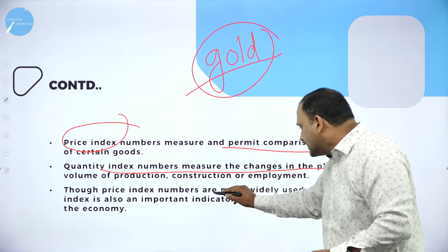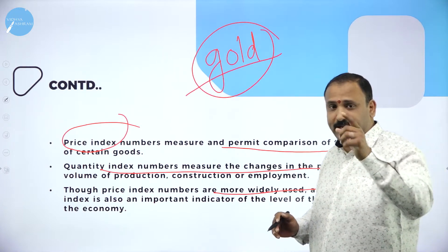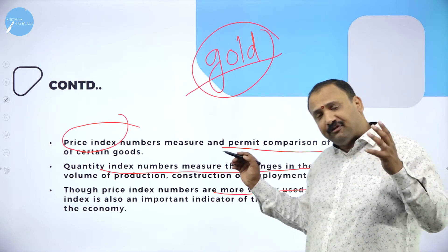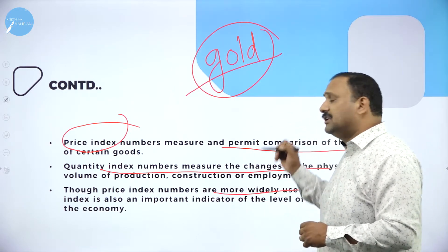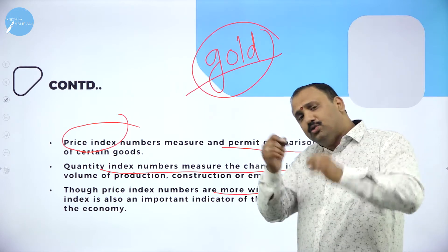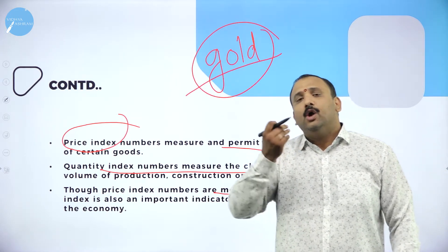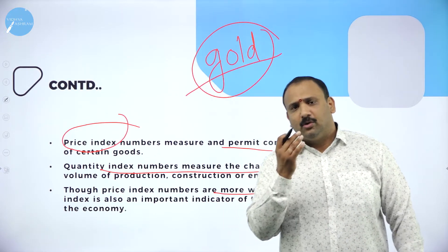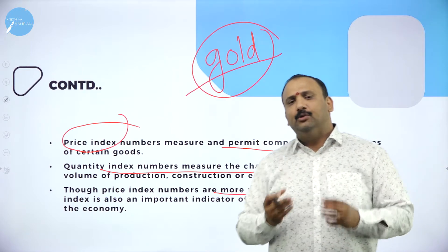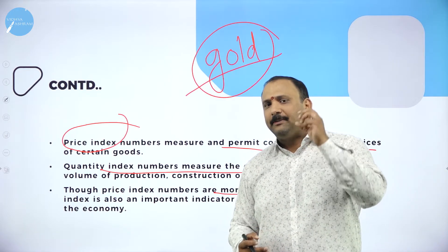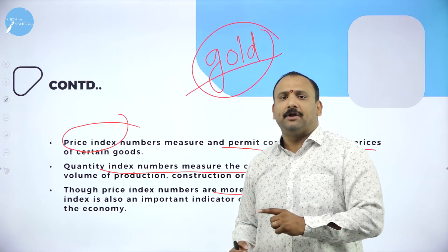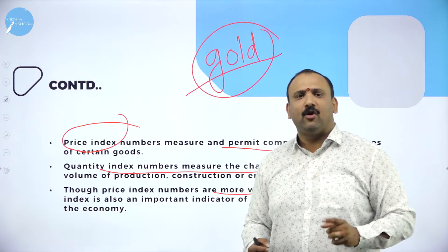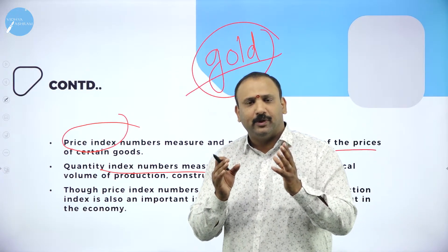Though the price index is more widely used — because price matters to you as a consumer — there are different levels of indicators also important in production. The production index is one of the most widely talked about index numbers in the economy. On the whole, index number is going to be the lifeline of any economy — measuring the positivity and negativity, the trend of the economy, and telling you where we are heading altogether.